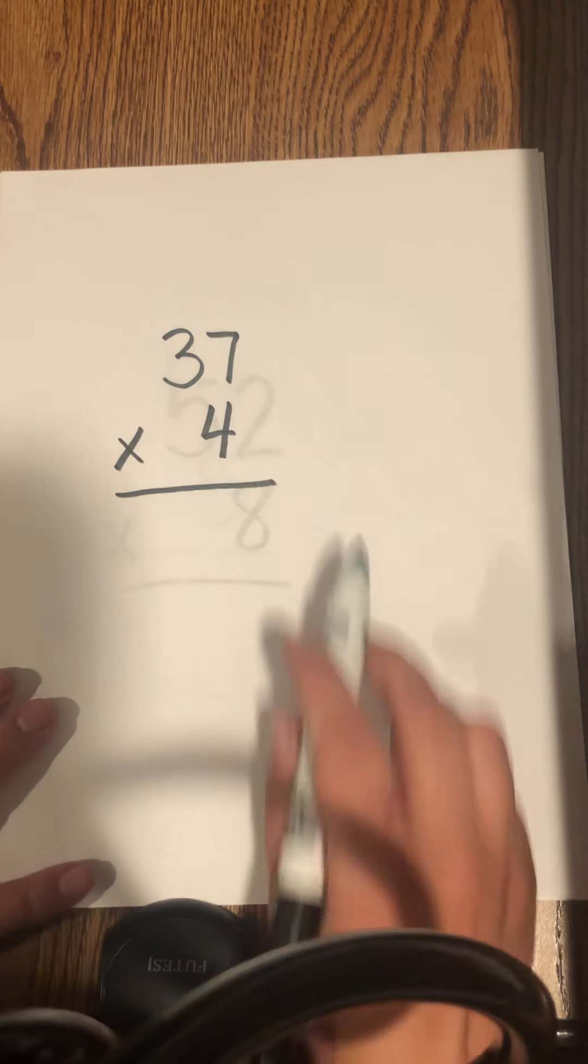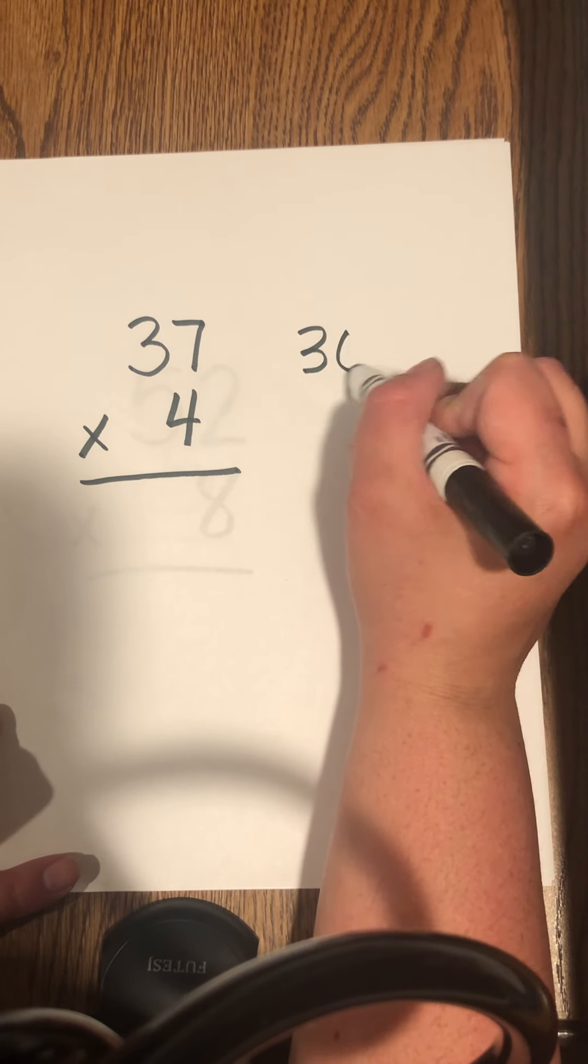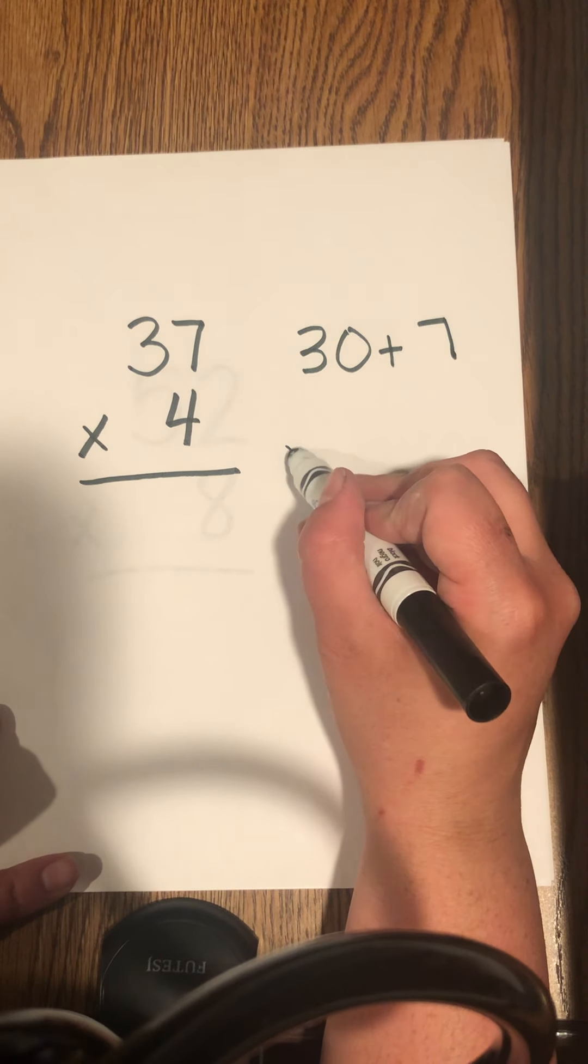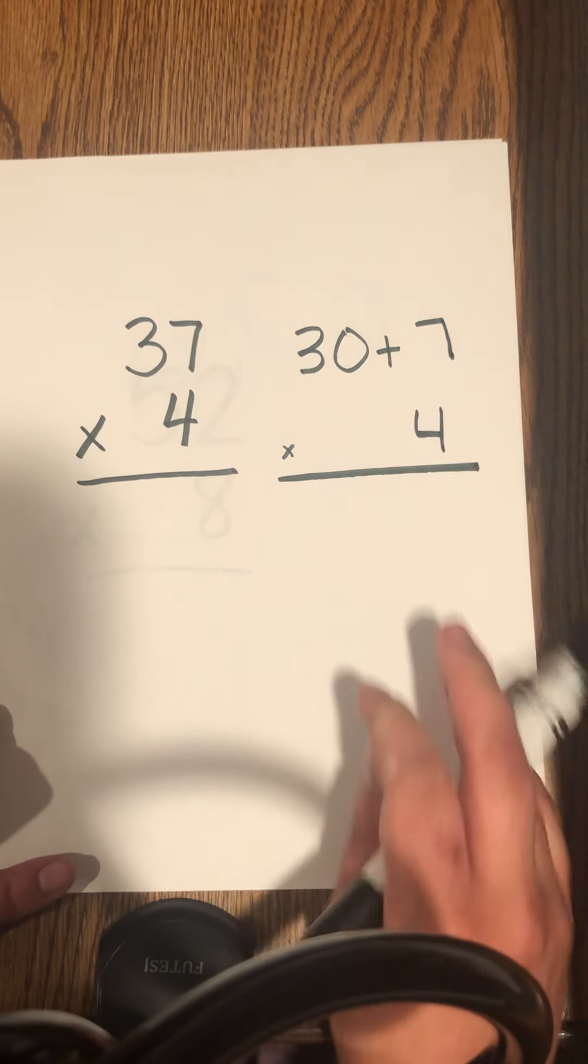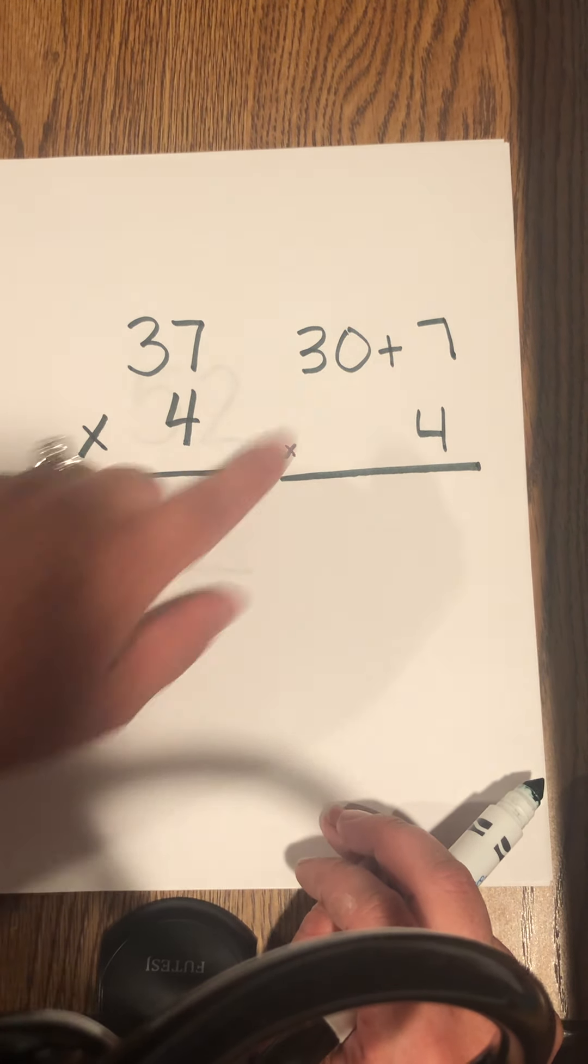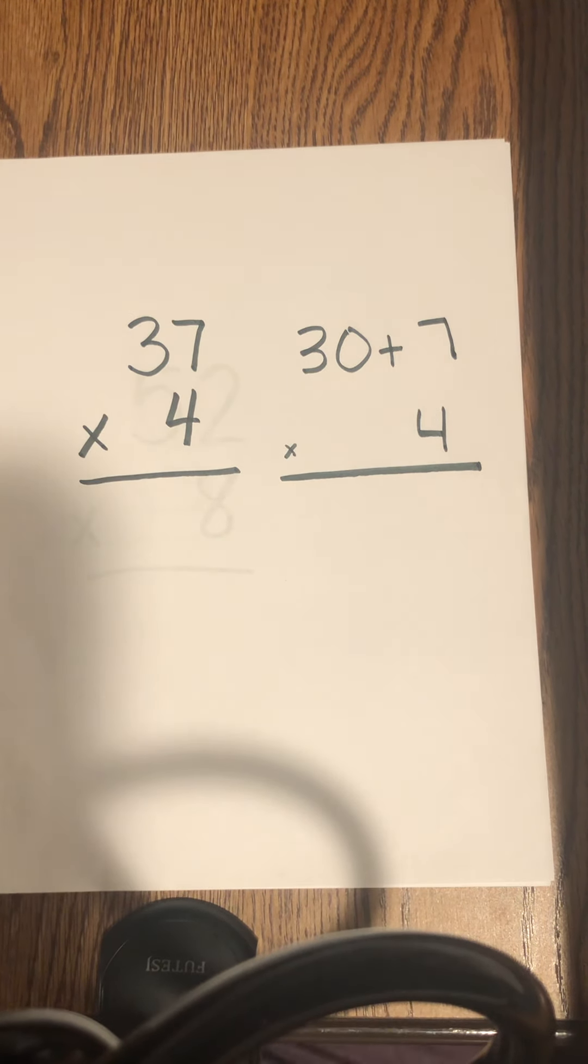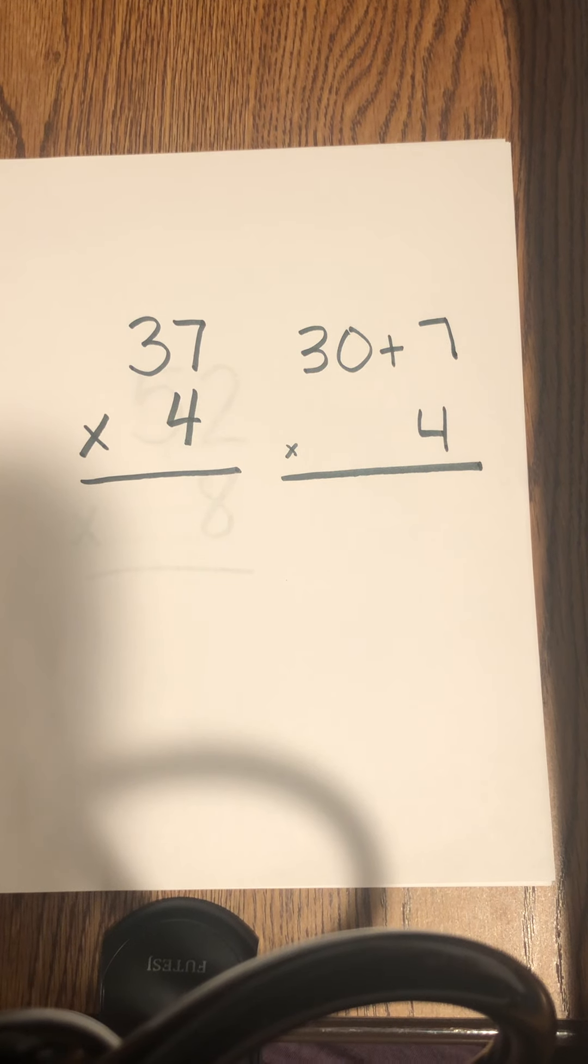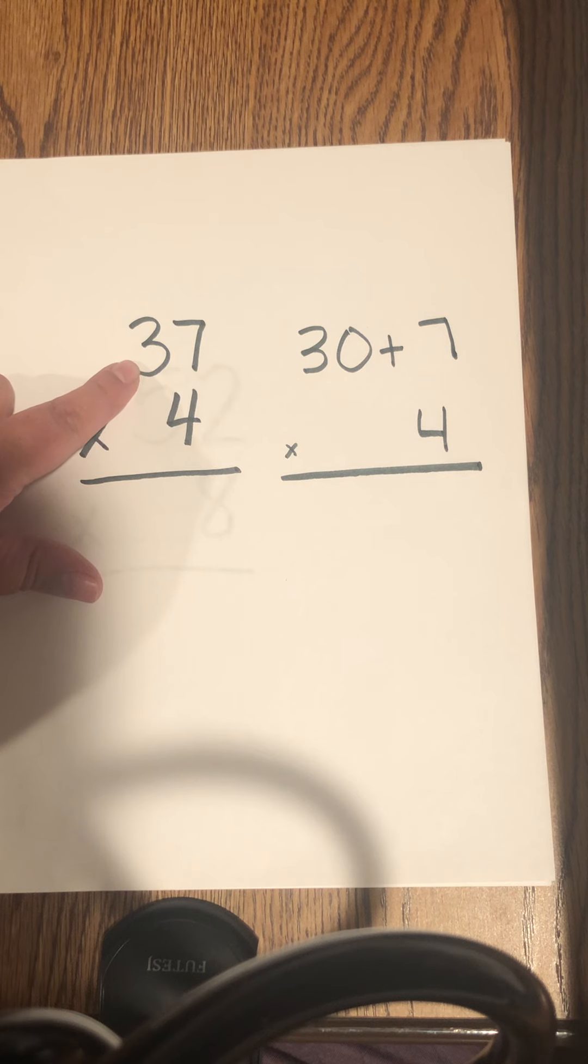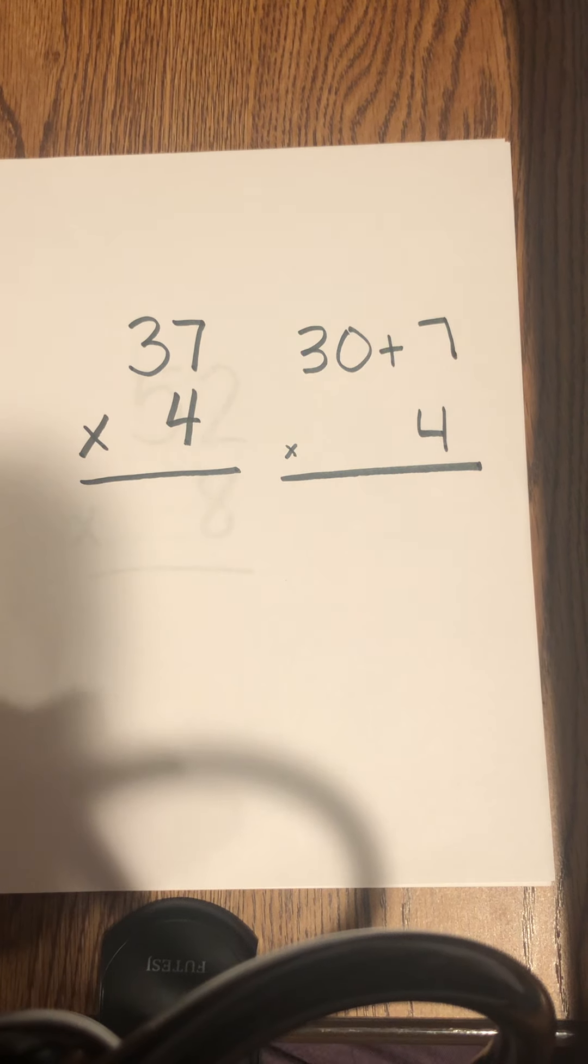So 37 times 4 is the same thing as 30 plus 7, right? And then timesing that by 4. Now, usually that's not how we write things out, but it's going to be important here so that we tell ourselves that this is a tens number because we want to look at that place value. So when I look at this number, I'm going to not be thinking of it as a 3. I'm going to be thinking of it as a 30.